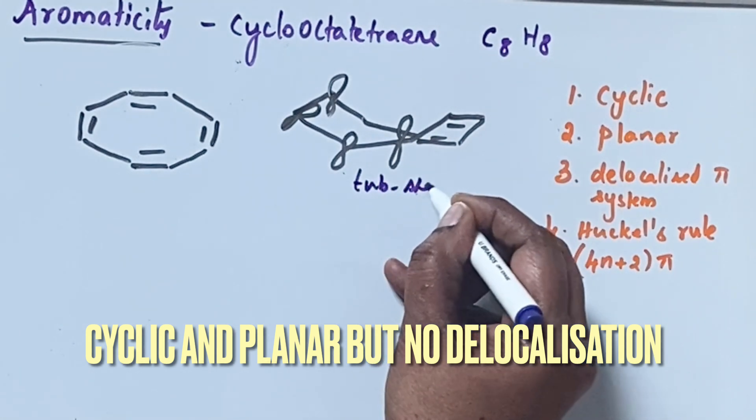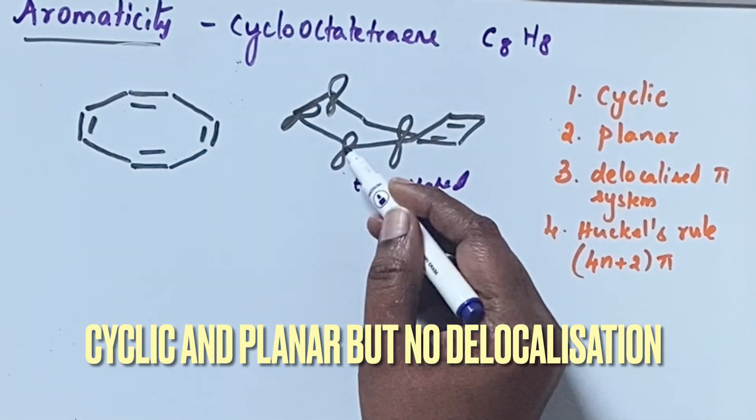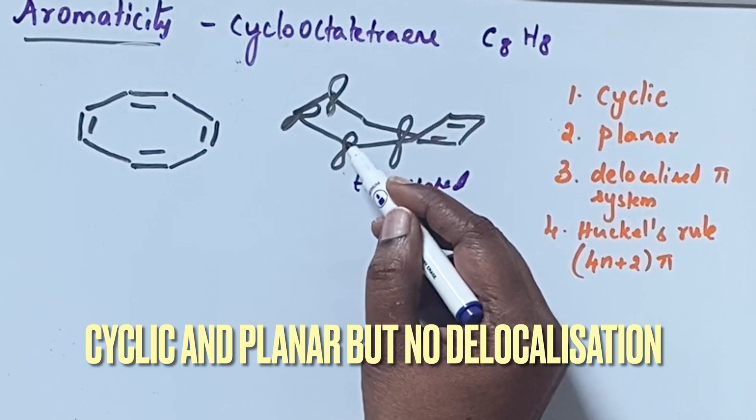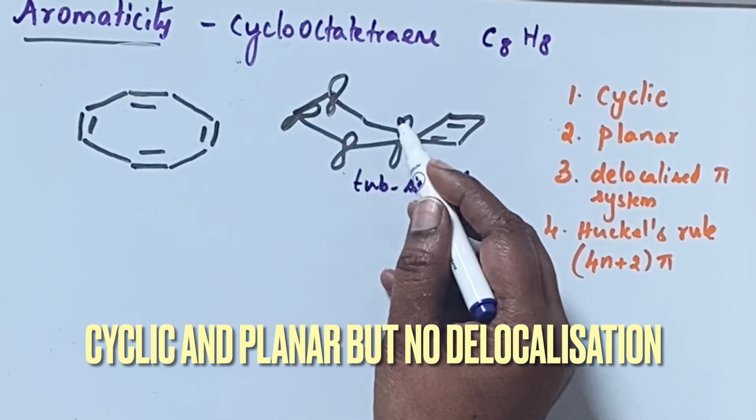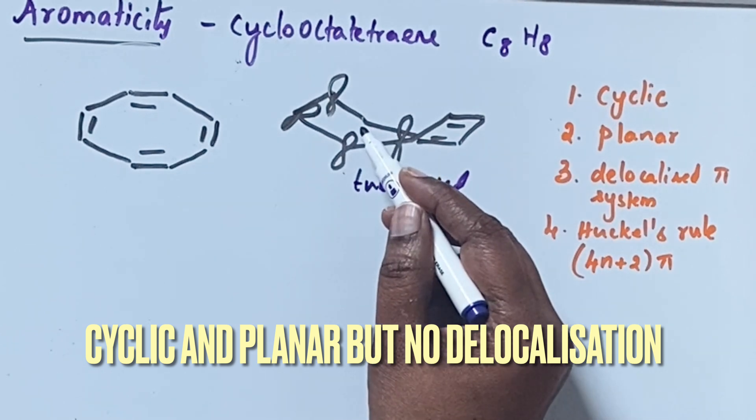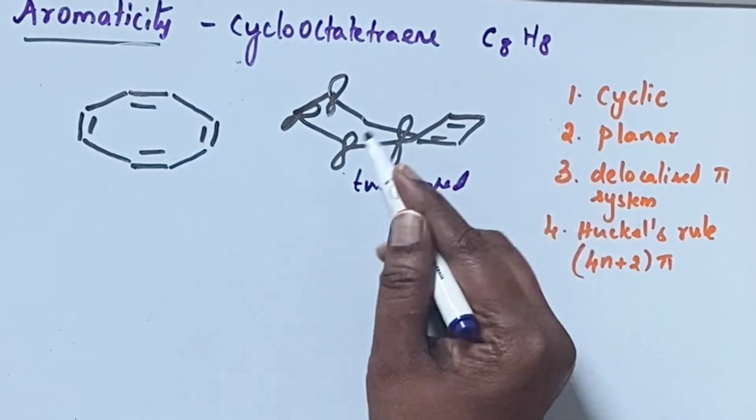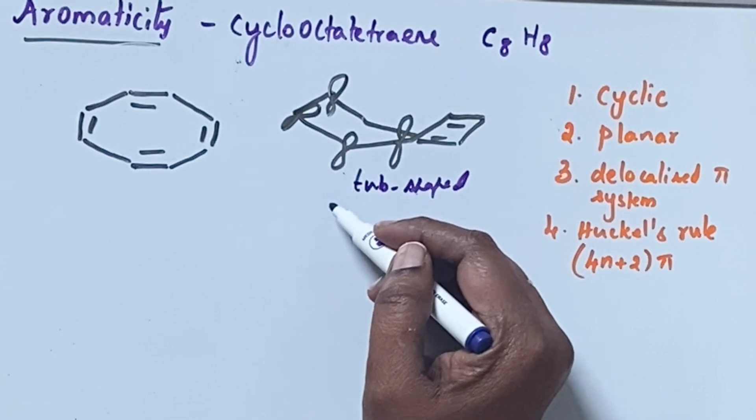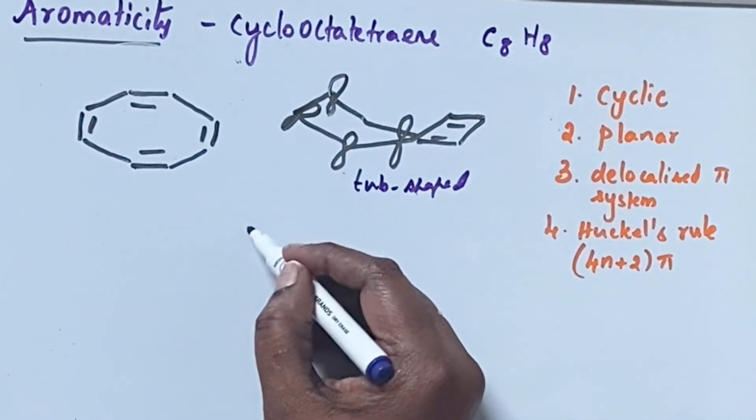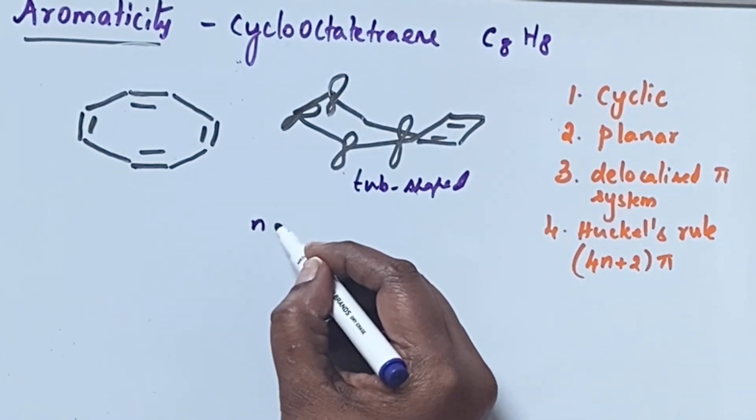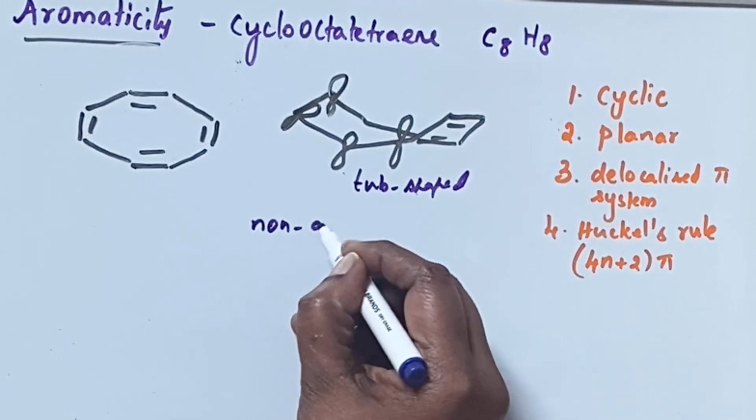Because of this shape delocalized pi electron p orbitals cannot overlap. So delocalization is not possible. Because of that even though it is cyclic it is not aromatic. So this cyclooctatetraene is non-aromatic.